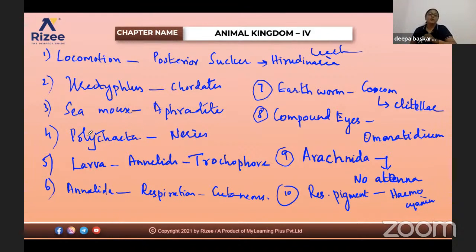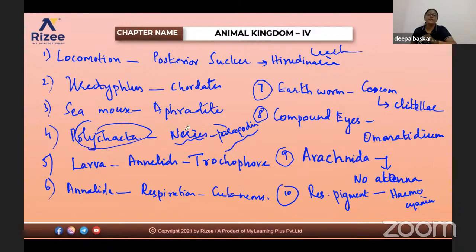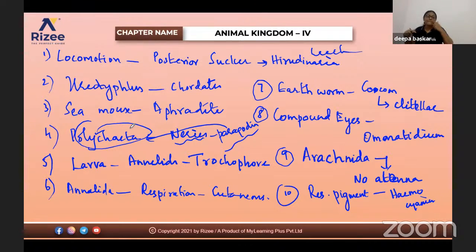Regarding Polychaeta: Nereis has parapodia — muscular extensions from the body. Animals with parapodia come under Polychaeta. If you take external morphology of earthworm, no additional muscles come out of the body structure, but Nereis has such structures.